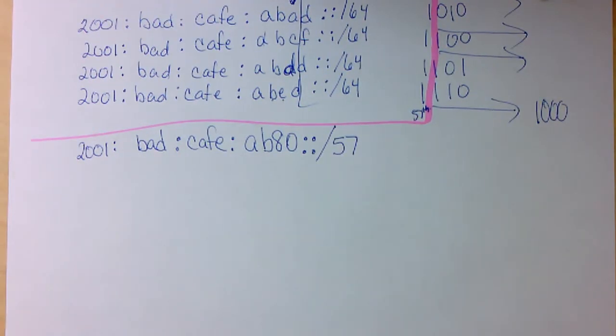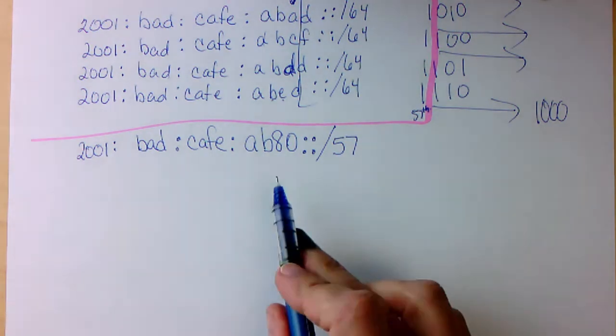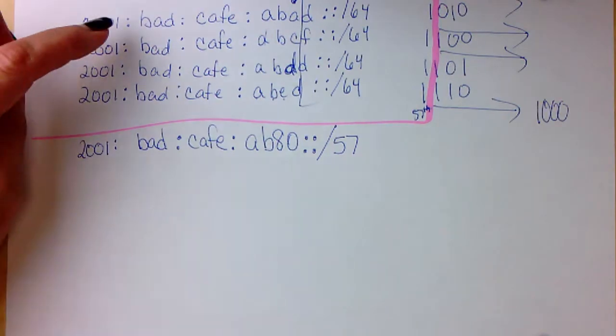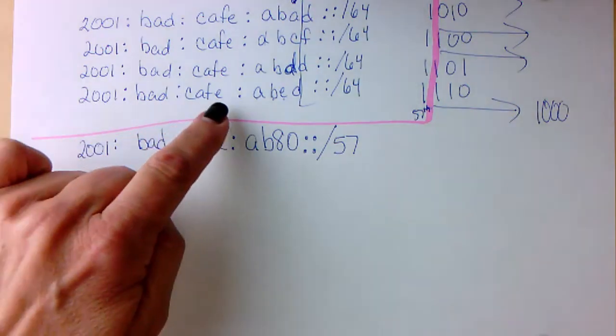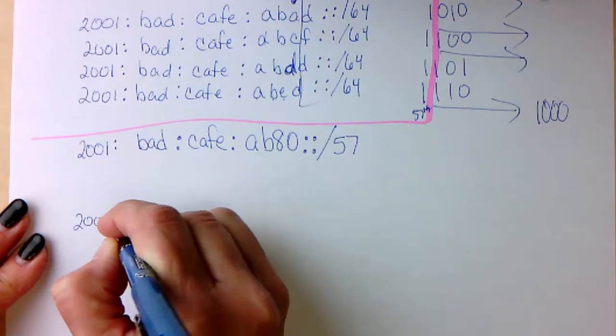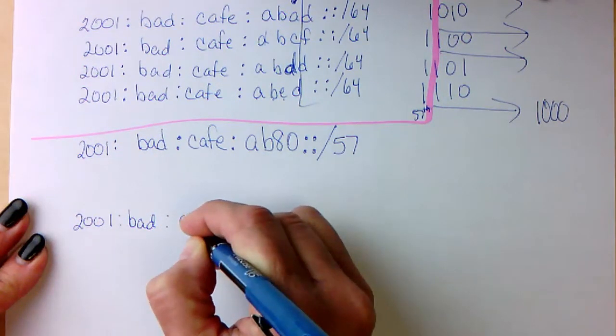Notice how just like with IPv4, it's always going to be less than what I started with. The summary will always be less than what I started with. So we have 2001:bad:cafe:AB80::/57. However, I'm going to do one more to see whether or not the shortcut will work with this. If you remember with IPv4, I taught you a shortcut to just look at the highest and the lowest and compare that. So if I have 2001:bad:cafe:ABAD and 2001:bad:cafe:ABED, that's my highest and lowest address.